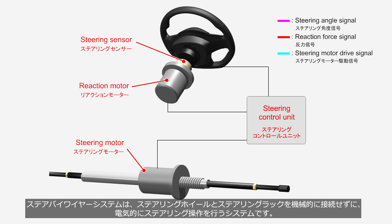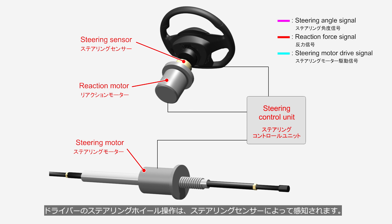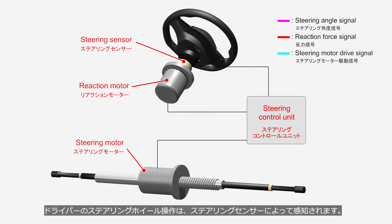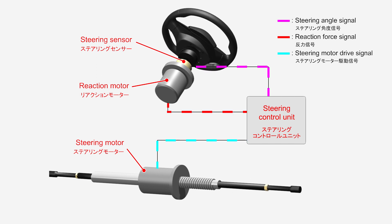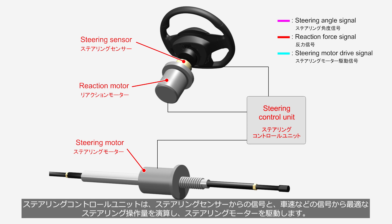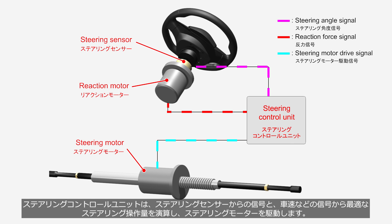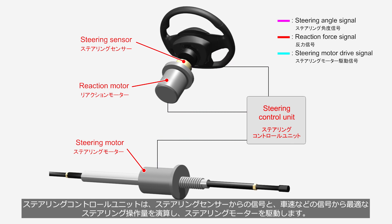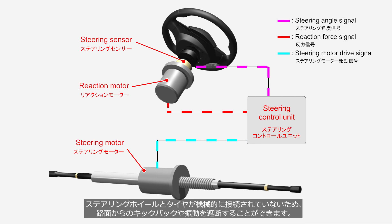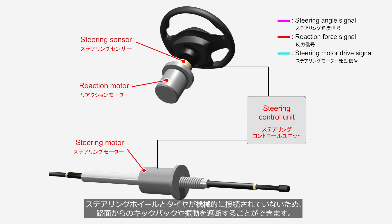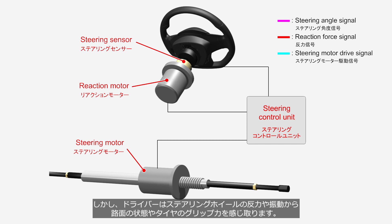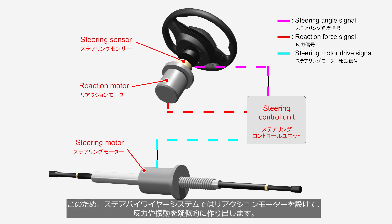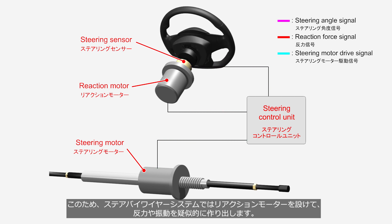A steer-by-wire system electronically controls steering operations without mechanically connecting the steering wheel and steering rack. The driver's steering wheel inputs are detected by the steering sensor, which — unlike the torque sensor in electric power steering — senses the angle and angular velocity of the steering wheel. The steering control unit calculates the optimal steering operation based on signals from the steering sensor and vehicle speed, then drives the steering motor. Since the steering wheel is not mechanically connected to the tires, it is possible to isolate kickbacks and vibrations from the road surface. However, since drivers sense road conditions and tire grip through reaction force and vibrations in the steering wheel, steer-by-wire systems incorporate a reaction motor to artificially generate reaction force and vibrations.